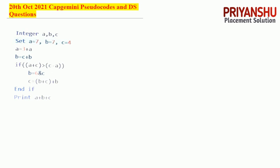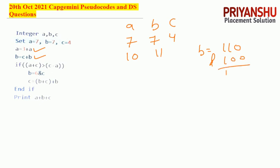The next question: a = 7, b = 7, c = 4 — so abc is 774. Now a equals 3 plus a = 10. b equals c plus b = 11. Condition a plus c greater than something — true; c minus b: c = 4, b = 7 so condition is checked, b equals 6 AND with c (4), so b becomes 4. Then c equals b plus b plus c: 8 plus 4 plus 4 = 12, giving around 26 as the final answer.